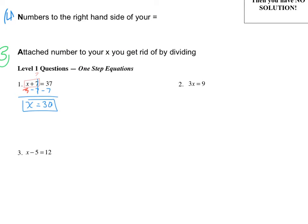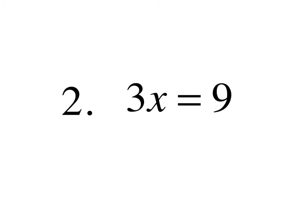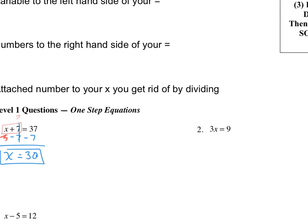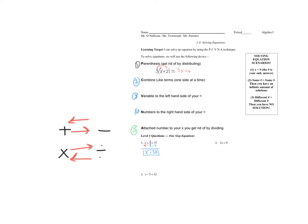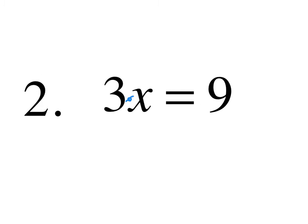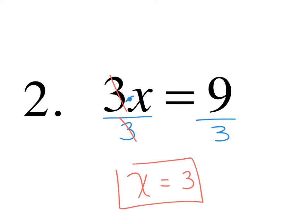Now I have 3x equals 9. I don't see addition or subtraction, but I do see multiplication, because my 3 is attached to my x. We said before that the way to get rid of multiplication is to do some division. So to get rid of a multiply by 3, we're going to divide by 3. My 3s cancel, so I get x equals 3, because 9 divided by 3 is 3.